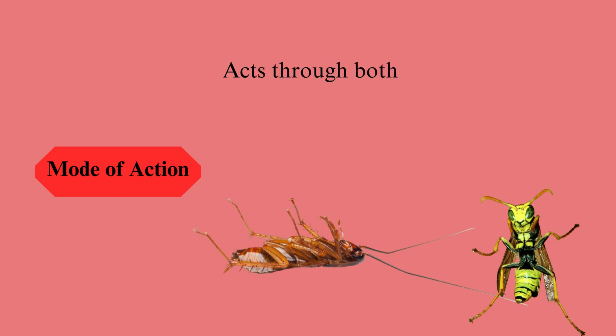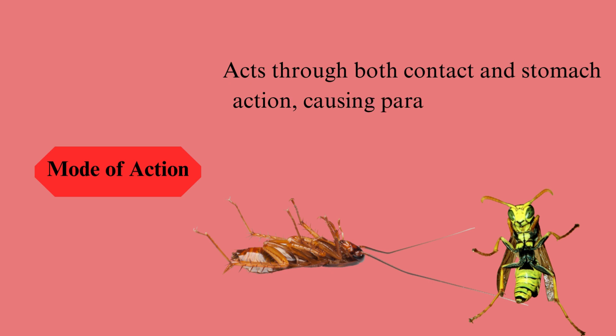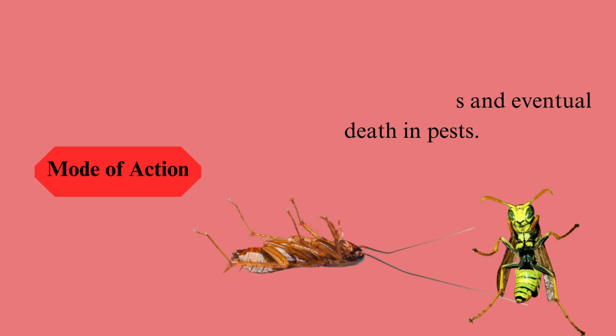Mode of action. The mode of action of abamectin involves both contact and stomach action. This means that the insecticide affects pests both upon direct contact with their bodies and through ingestion, targeting their nervous system and leading to paralysis and eventual death.